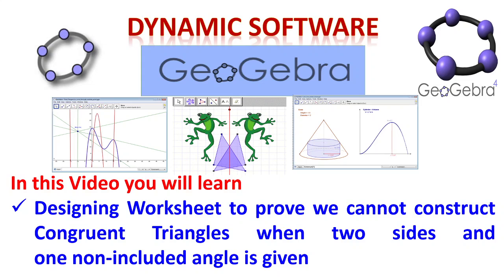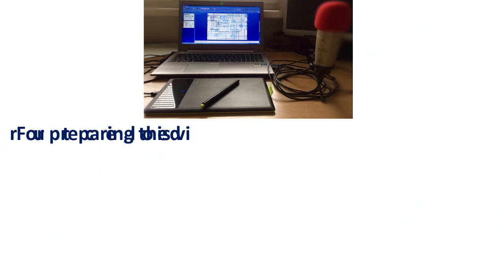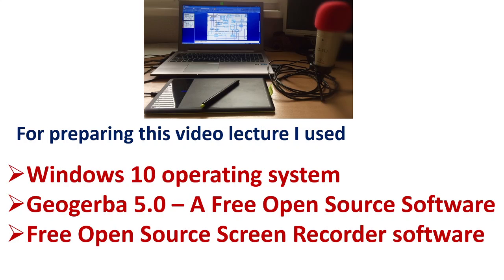Normally we will call it as SAS criteria, telling that the angle should be an included angle between the sides. Suppose if two sides and one non-included angle is given, you are going to check whether congruent triangle can be constructed or not.